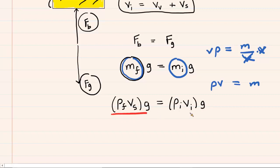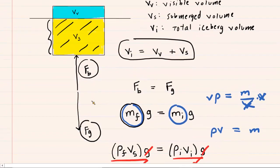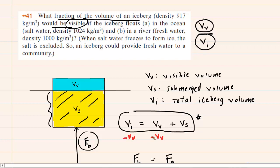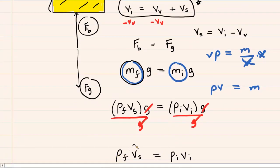We can divide both sides by G, canceling it out. Our goal is to find V sub V over V sub I — the fraction of the iceberg volume that is visible. Recalling that V sub I equals V sub V plus V sub S, we can solve for V sub S: it equals V sub I minus V sub V. We substitute this expression for V sub S, replacing it with V sub I minus V sub V.